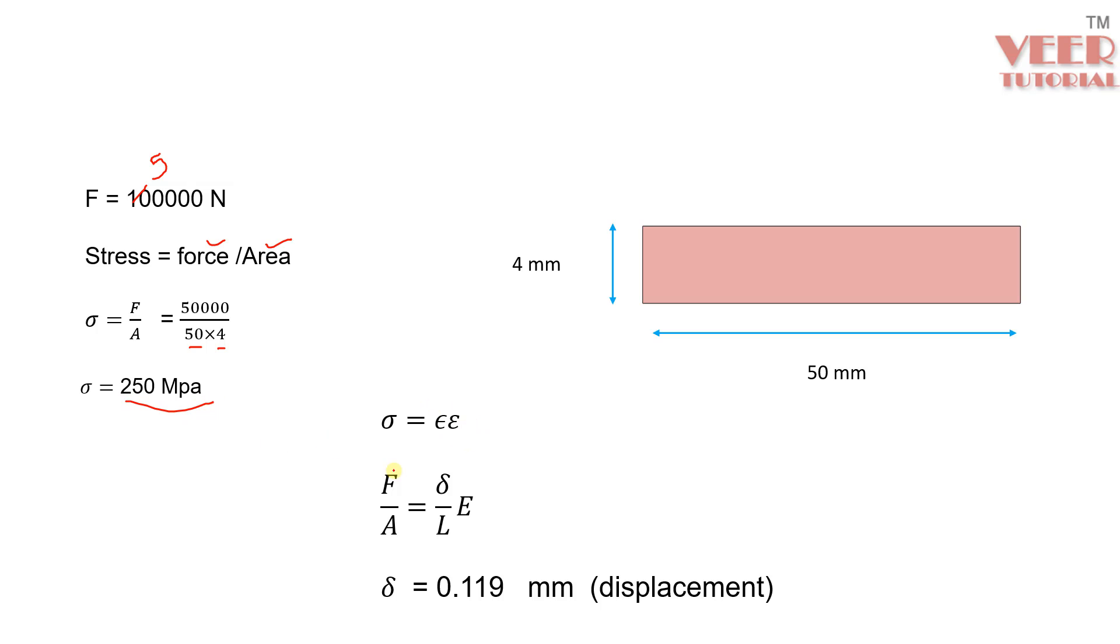And let's say we want to find out the deformation or the displacement in the body. Then we need to apply this: stress equal to strain into Young's modulus. So here, we know that stress equal to force divided by area. Strain equal to change in length by original length and this is Young's modulus. So we have all these values. We have value of length, area, E, F. We can calculate the value of displacement here.